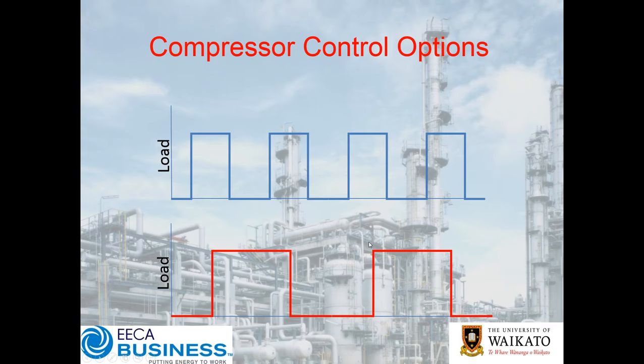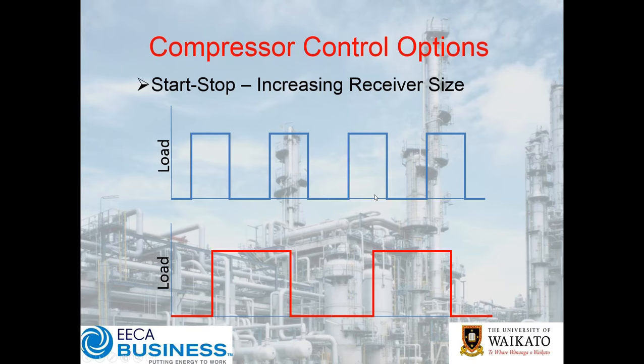A large receiver could cost you $20,000 or $30,000 here in New Zealand — it's a significant expense — so you think, well, let's just avoid it, we'll save the money and not worry about it. But there is a consequence here.